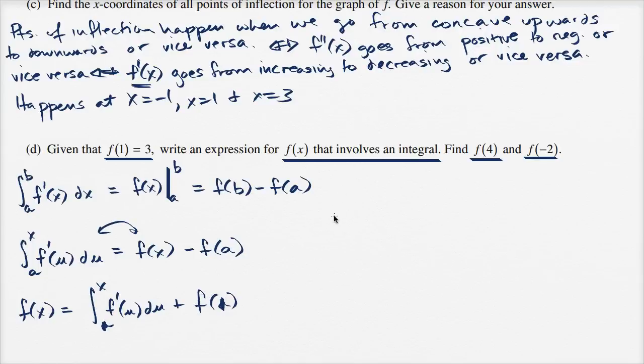So we can write f of x is equal to the integral from one to x of f prime of u du plus f of one. They told us what that is. That is going to be equal to three. So this is the first part right here. We just did it. That is the first part of the problem.